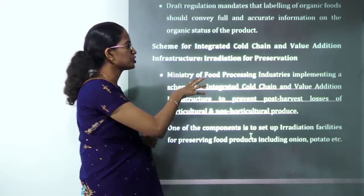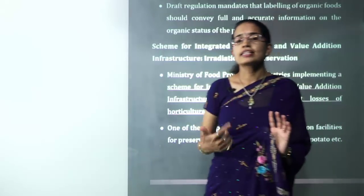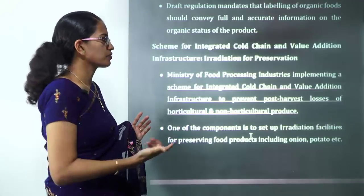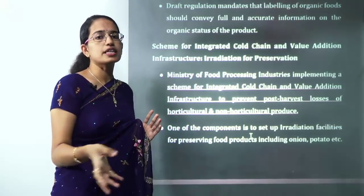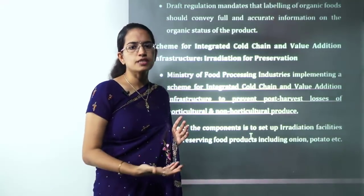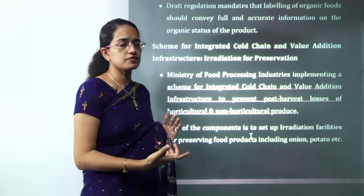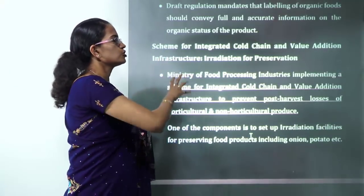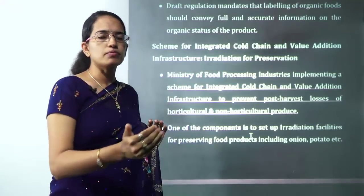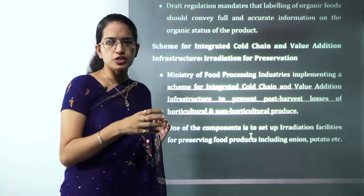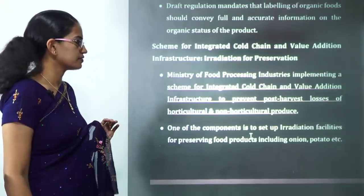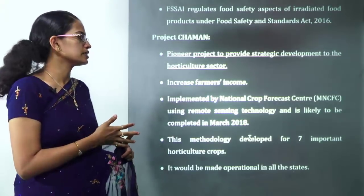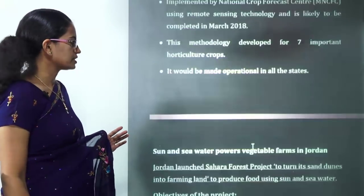The goal is to double the farmer's income by 2022 by integrating agriculture with allied activities. The concept of integrated cold chain and value addition is key — rather than selling raw produce like lemons, farmers can sell value-added products like lemon pickle. Irradiation is one preservation technique used in this context. Project Chaman is very important — it focuses on horticulture, increasing farmer income, and developing horticulture and allied activities in India.